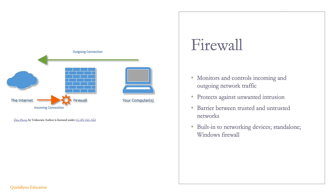Firewalls monitor incoming and outgoing network traffic and protect against unwanted intrusion into a network or system. Firewalls act as a barrier between trusted and untrusted networks, such as a trusted LAN and the untrusted internet. Firewalls can be built into networking devices such as small home office equipment, standalone hardware for enterprises, or software such as the firewall built into the Windows operating system.